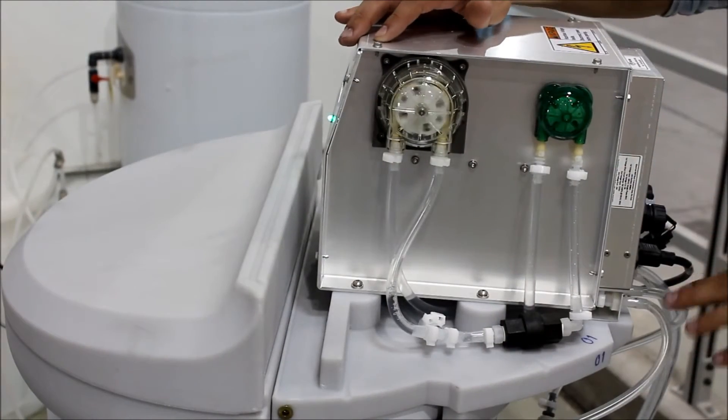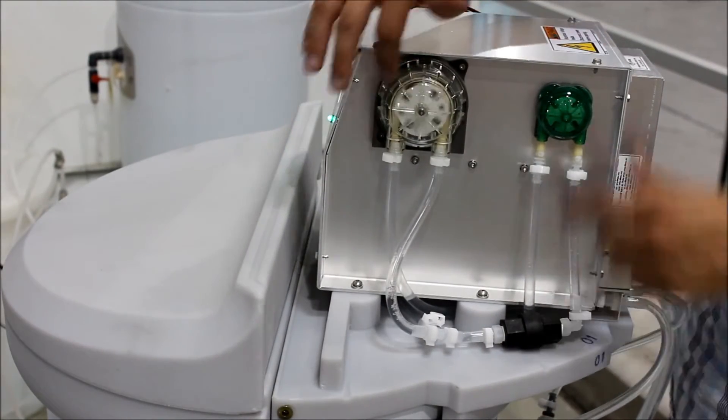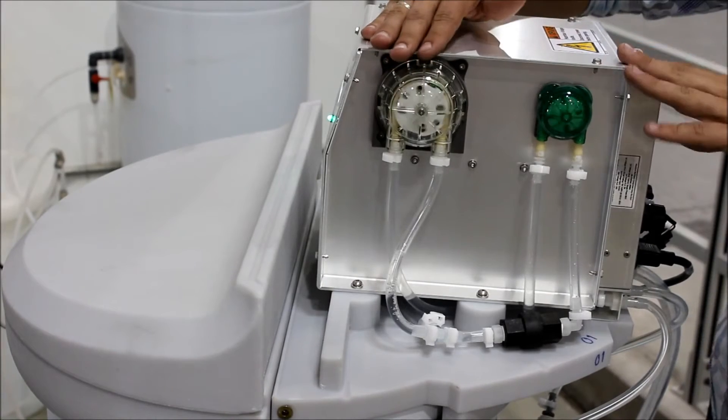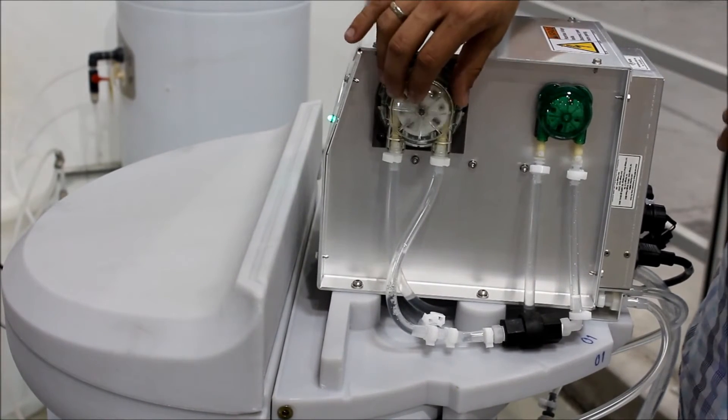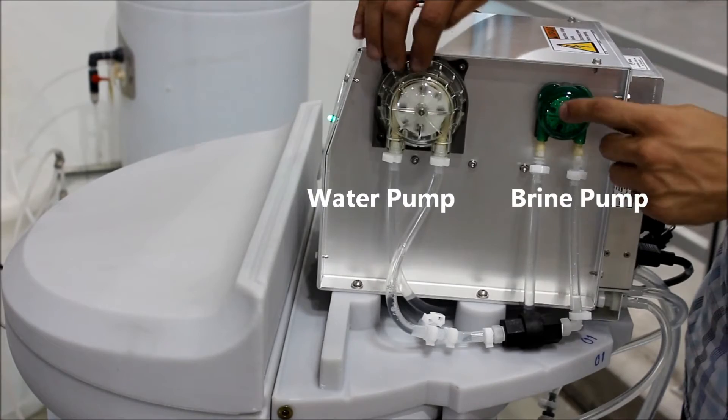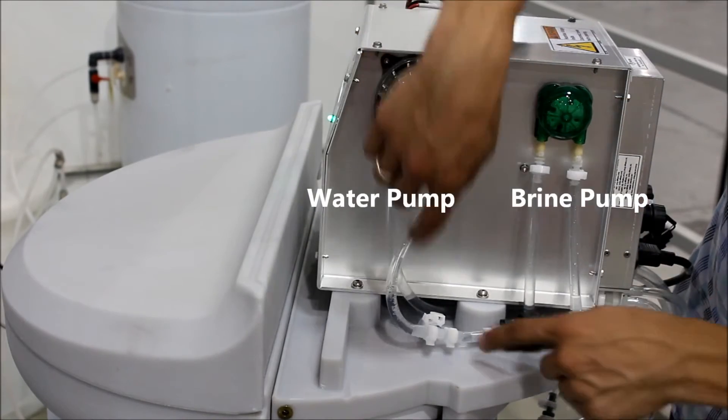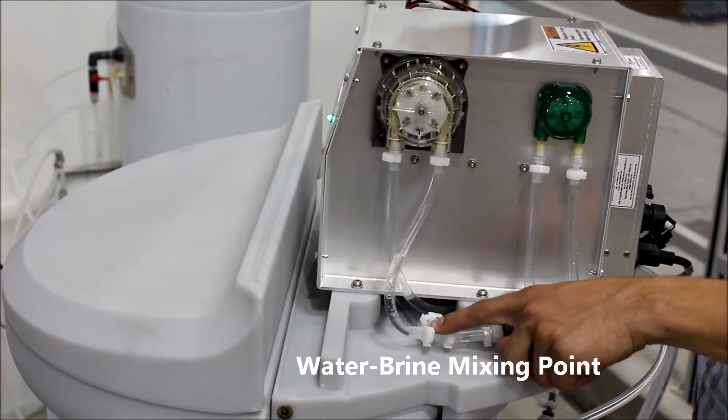You can see that the water and the brine are fed in through these pumps. Most of our systems use a pressurized feed water source. This unit uses a pump. The brine pump and the water pump are then merged together at this point and passed into the cell.